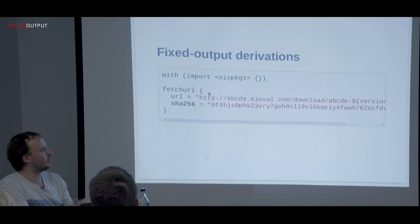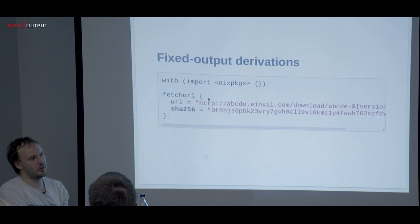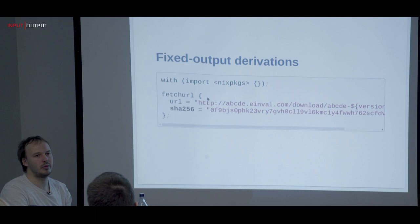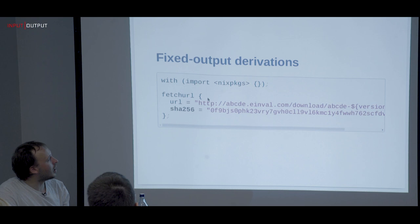This is what we do at IOHK as well — we have a binary cache. You can get a 30 megabyte compiled Haskell binary for most of our commits that are in GitHub.